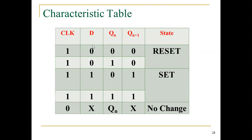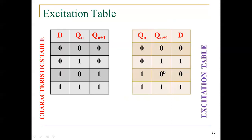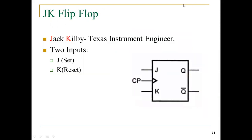In the truth table: D=0 gives Q=0, and D=1 gives Q=1. You can draw the Karnaugh map and reduce to get the output equation. For the excitation table: Q(n)=0 to Q(n+1)=0 requires D=0; Q(n)=0 to Q(n+1)=1 requires D=1; Q(n)=1 to Q(n+1)=0 requires D=0; Q(n)=1 to Q(n+1)=1 requires D=1.